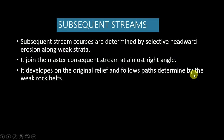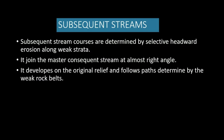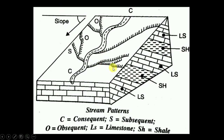Let's talk about subsequent streams. Subsequent streams are those which join the consequent stream at a right angle, because subsequent streams originate on the flanks of anticlines and join the master consequent — that is why they meet at a right angle. As an example, for the Ganga River, the Son River would be its subsequent stream. And for the Yamuna River, the Asan River is one of the tributaries which is a subsequent stream.